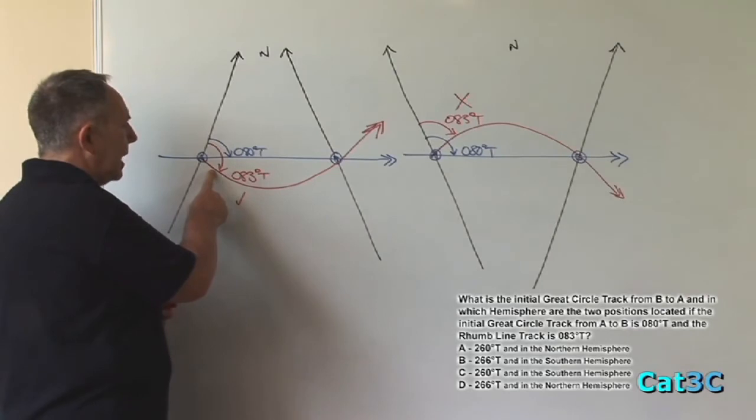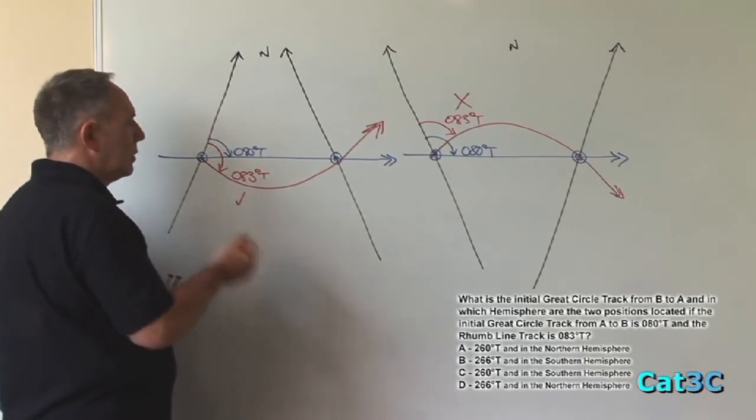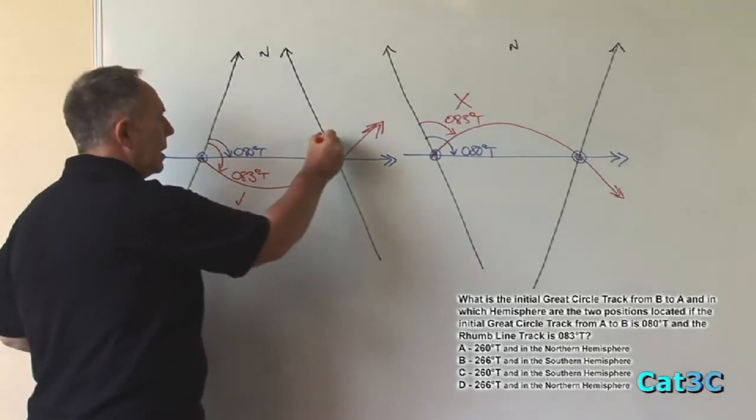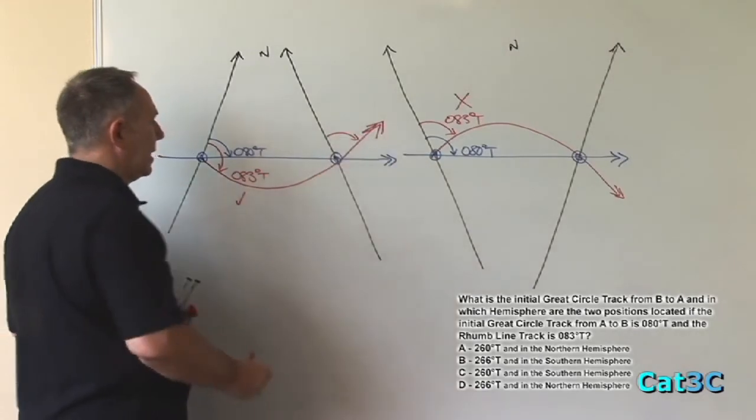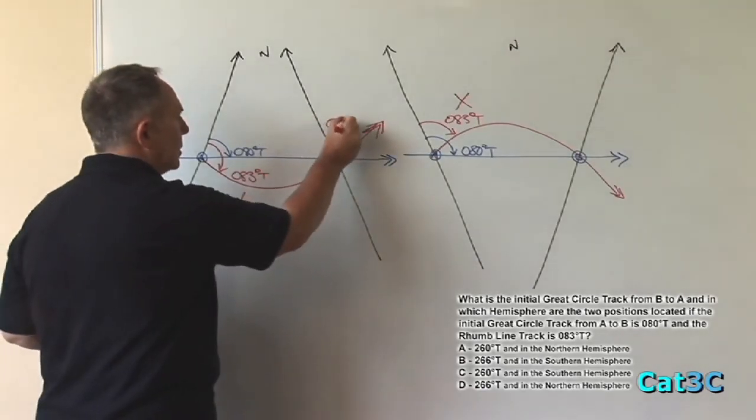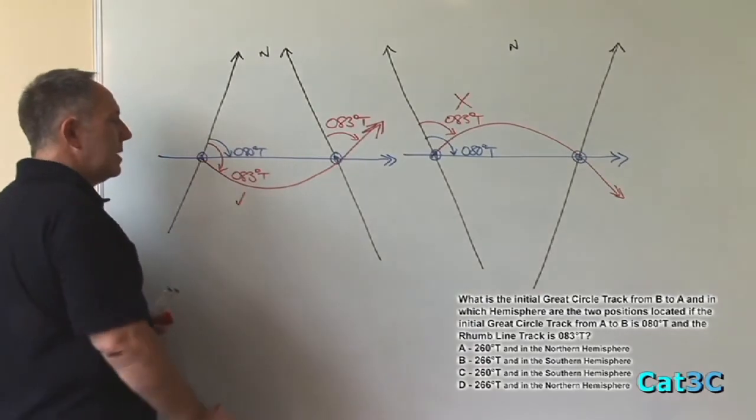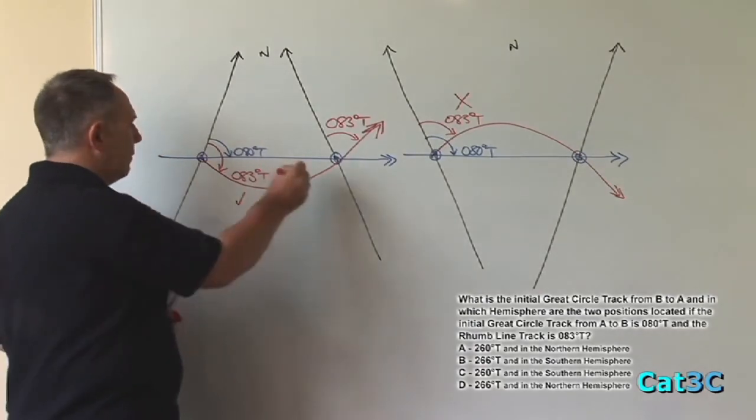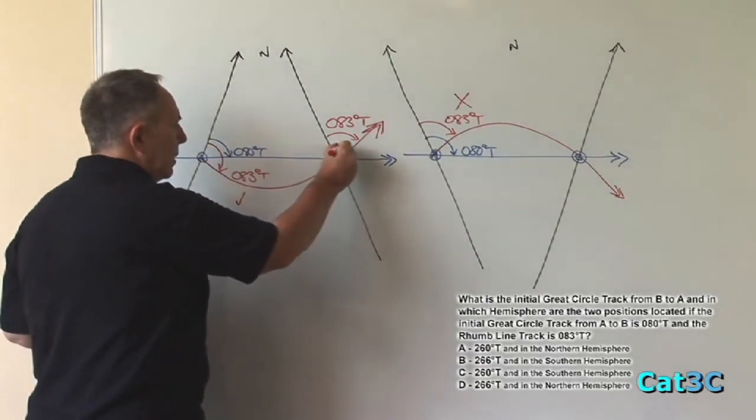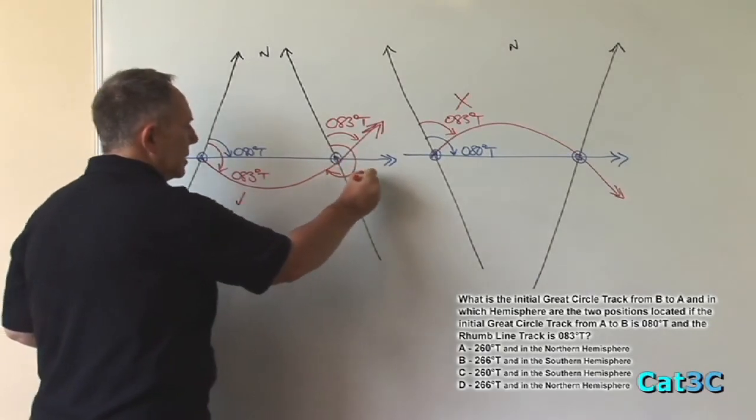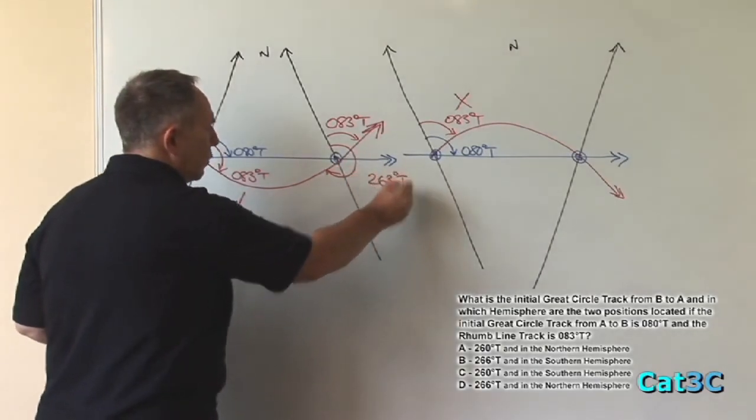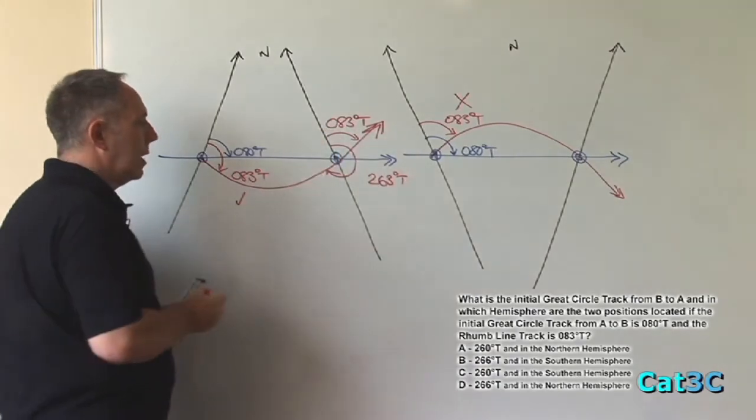The track angle at A is 083 degrees true, the rum line track, therefore being a constant bearing, the rum line track at B is also 083 degrees true. Which means that the reciprocal track from B to A is 263 degrees true, which is 083 plus 180.